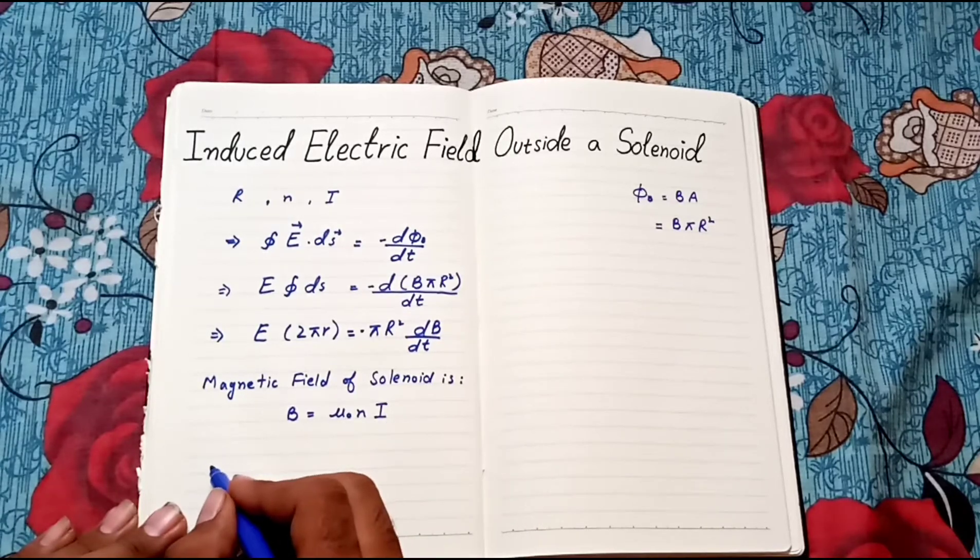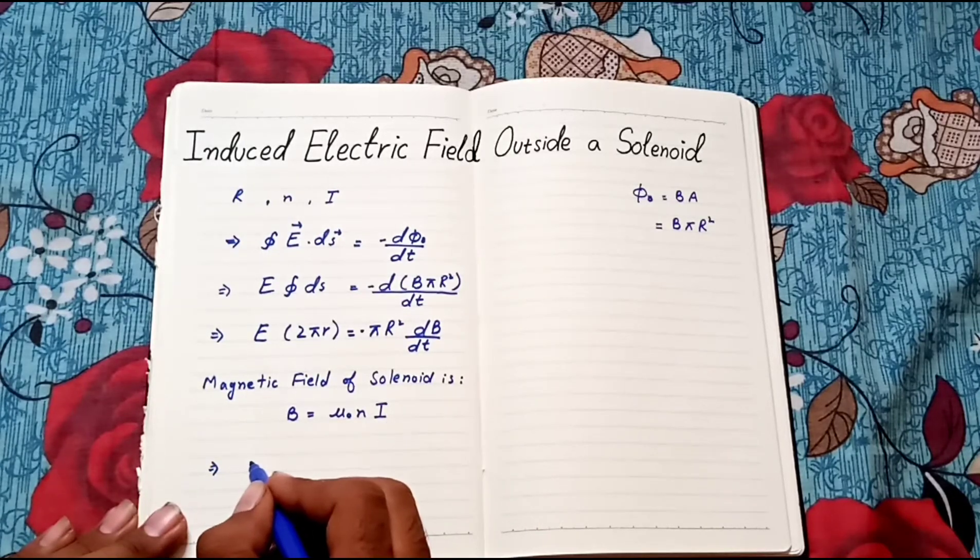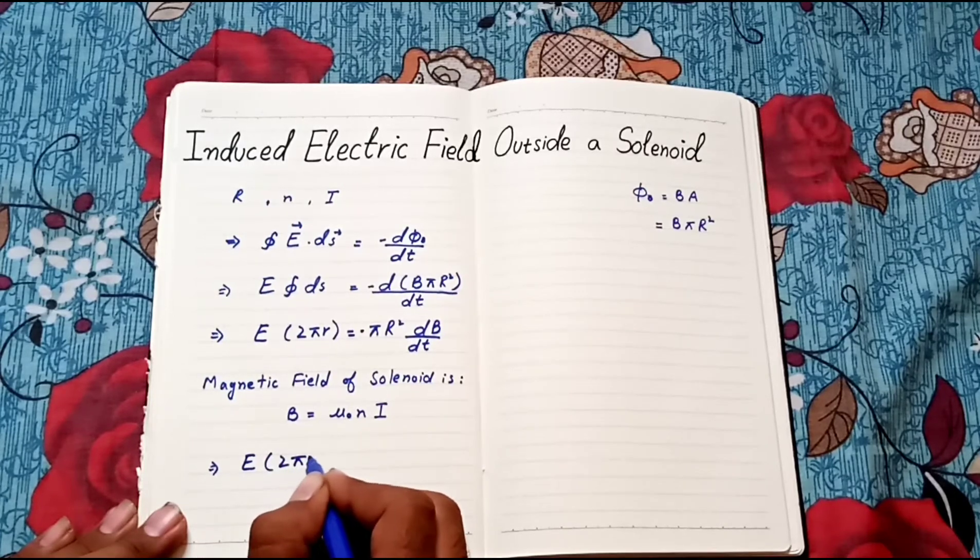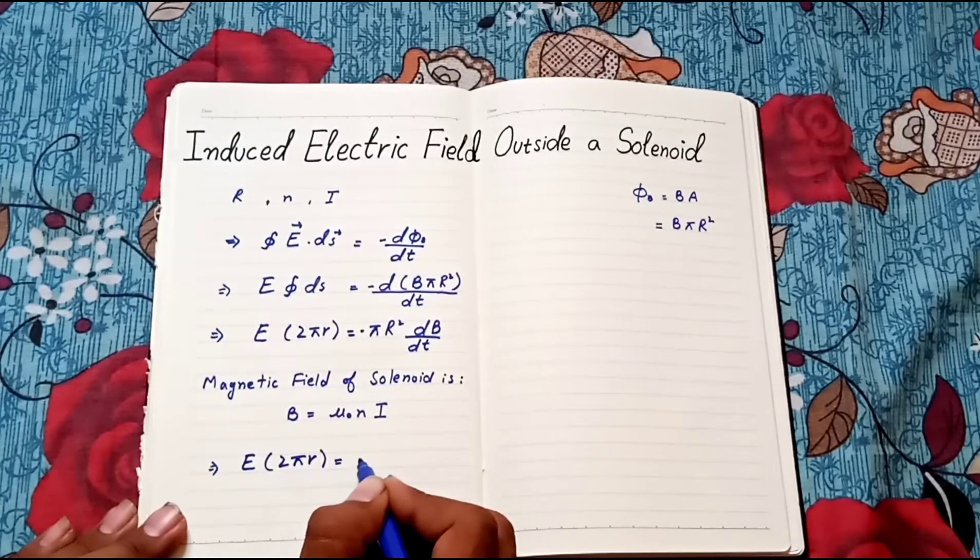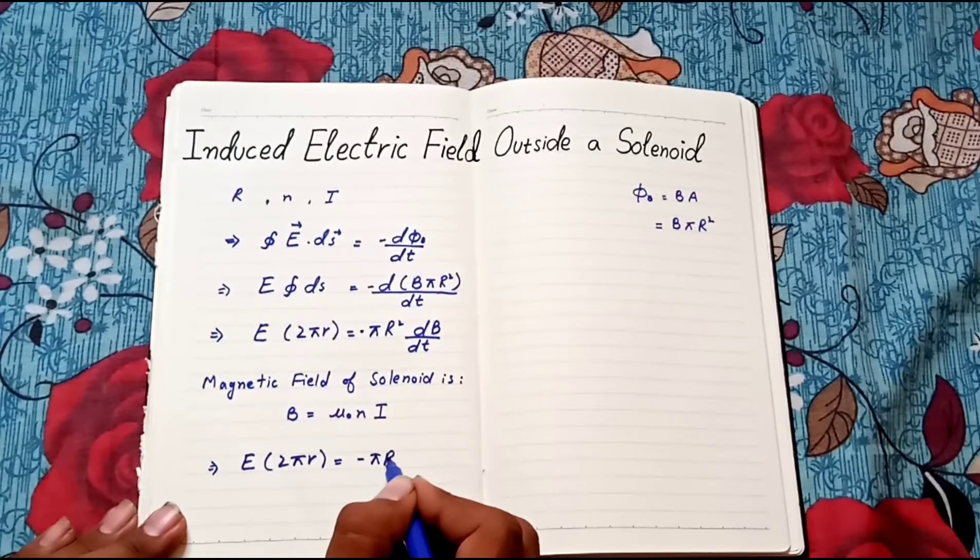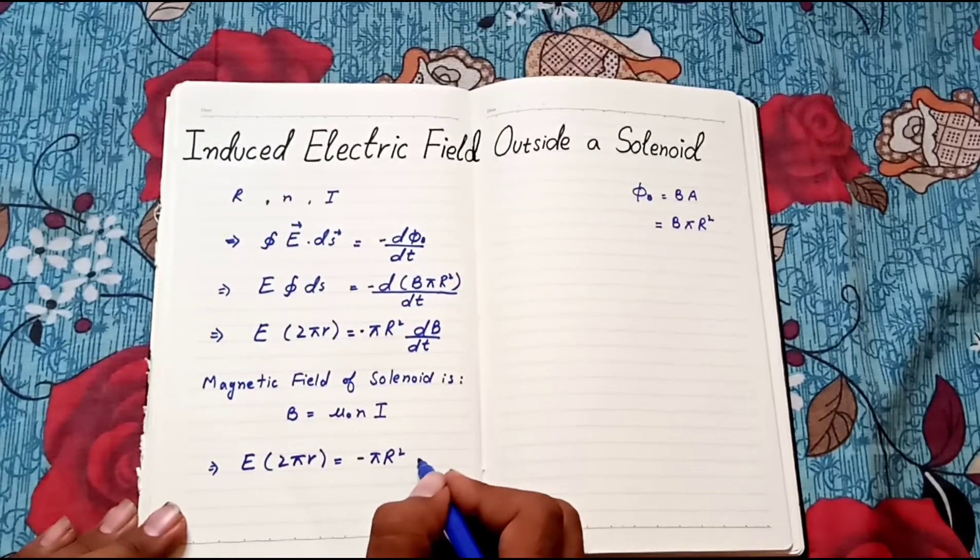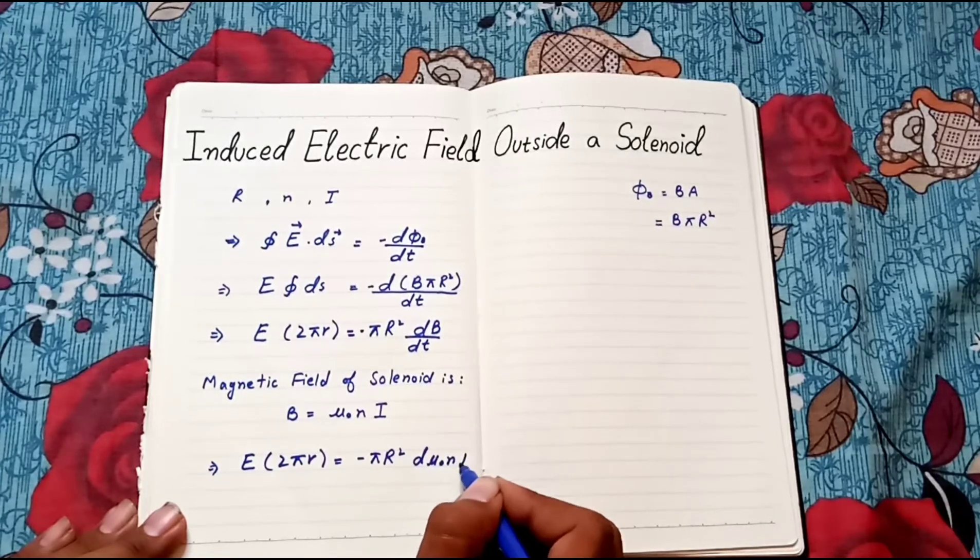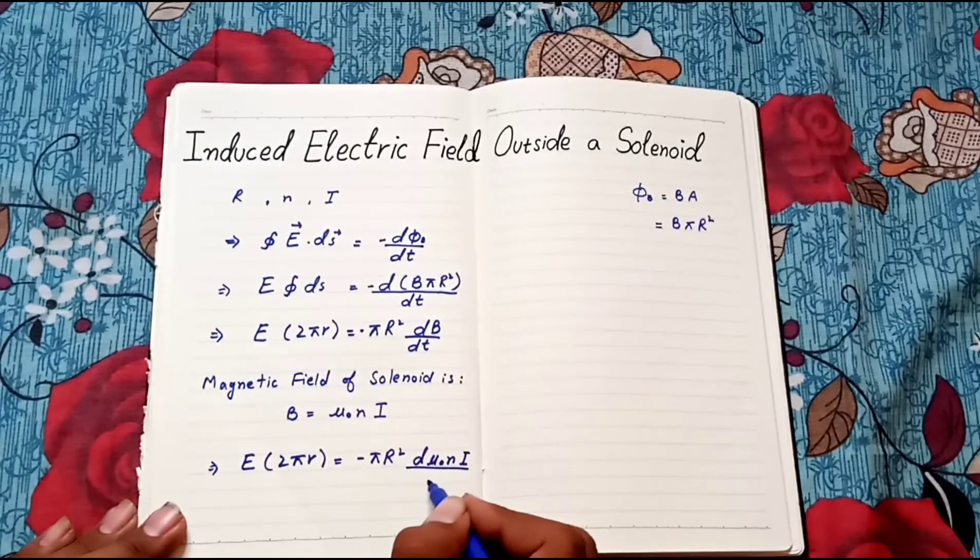Thus, our equation becomes E 2 pi r equals minus pi r squared d mu naught n i upon dt.